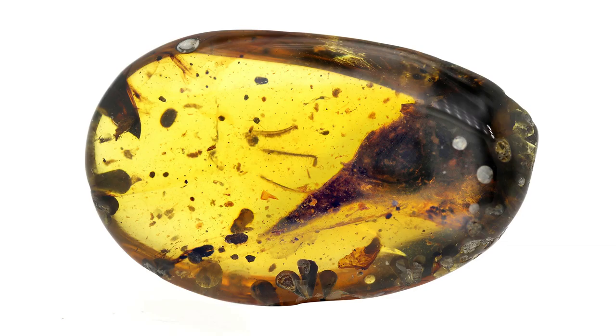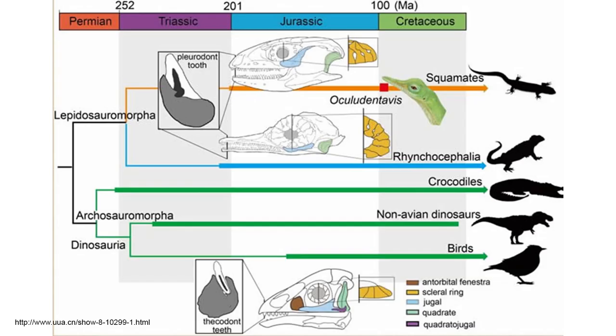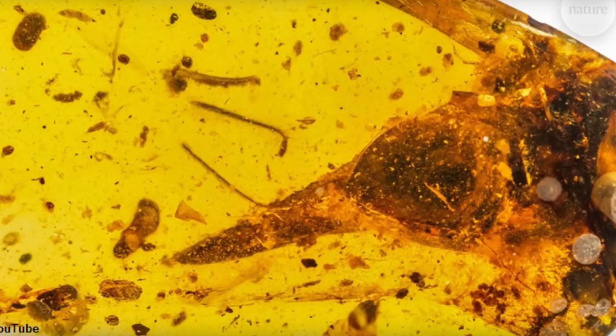This Burmese amber also recently preserved a teeny tiny little lizard that was published in the journal Nature as a possible dinosaur or bird, but has recently been interpreted as a little tiny lizard. These viruses are so tiny they can't be directly observed in the amber.